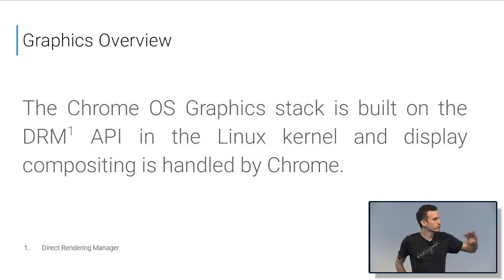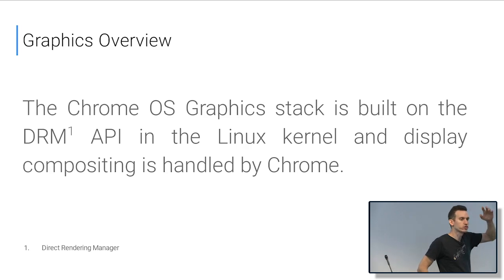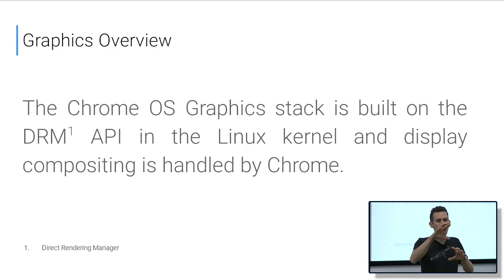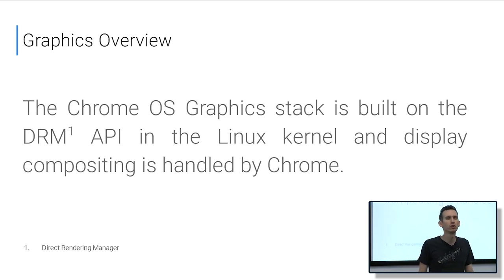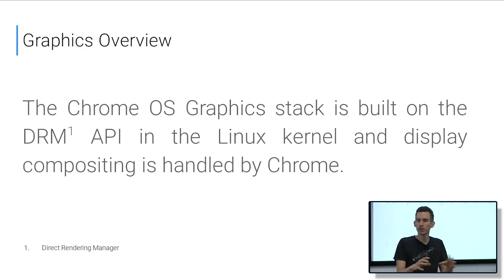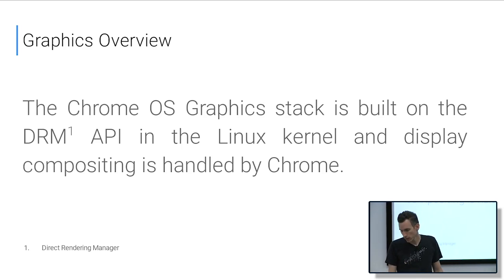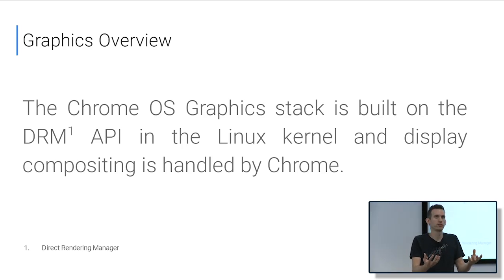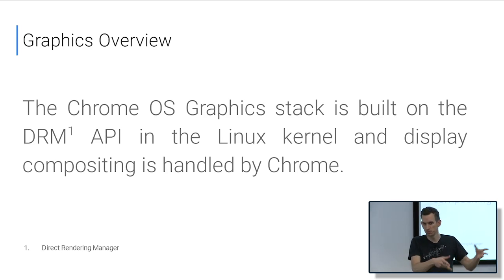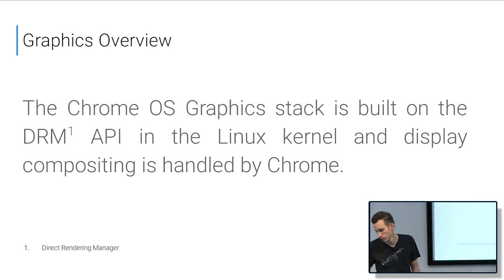Let's start with a super high-level description of what's happening. The Chrome OS graphics stack really has two halves. One is user space — Chrome, running in user space, is the big application. It sits on a kernel API called DRM, which provides services in terms of display and graphics. The Linux kernel provides the basic services at the graphics level, and Chrome exploits these to build the interface we saw earlier.